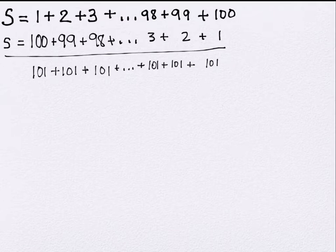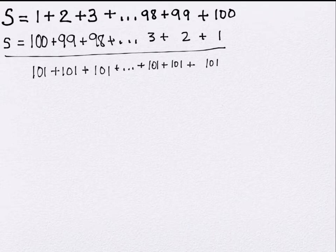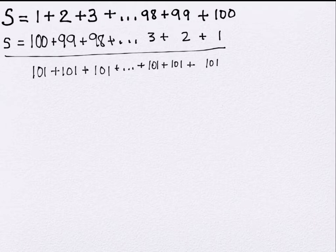When you add the same number together a whole bunch of times, there's a faster way to do that — multiplication, which we learn around the end of second grade. So if I know how many 101s there are, I can simply multiply 101 by that count. The question is: how many of them are there?